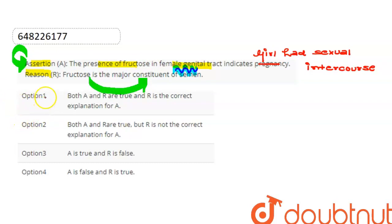Option 1 states: Both assertion and reason are true and reason is the correct explanation of assertion. This option is wrong.